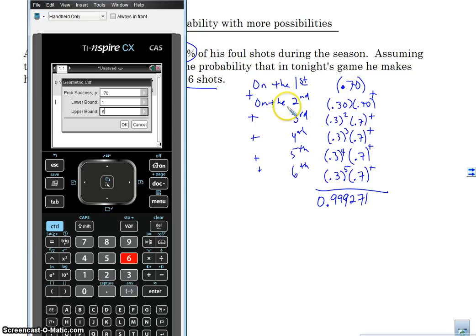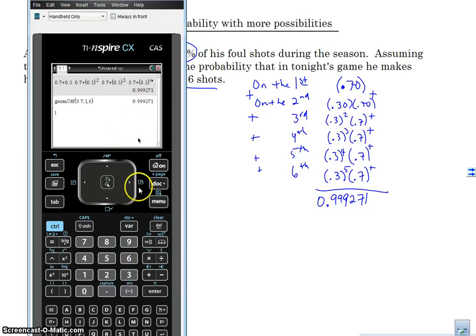So now, if I said what's probably makes his first between the third and the sixth, then I would put three and six, okay? Alright. So I hit okay. And I get the same answer, okay? So again, that lower bound is the first shot, the upper bound is the sixth shot. If I wanted to know between the fourth and the sixth shot, I would have been four and six, okay? So that's using geometric CDF in your calculator to calculate the geometric probability when you have more possibilities than just on a certain trial.